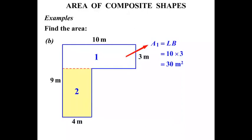Area 2, also a rectangle. So we write Area 2 equals length times breadth, LB. Now this time though, this length, we don't know it. So let's just focus on that. Let's get rid of everything else.